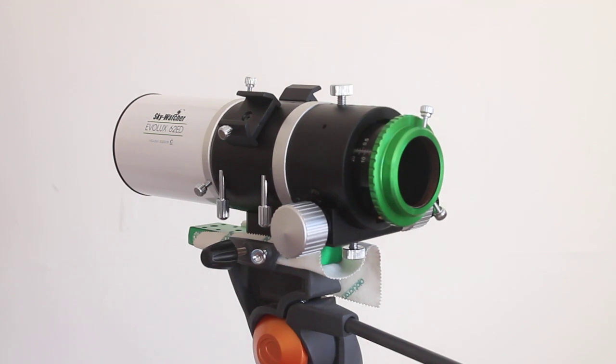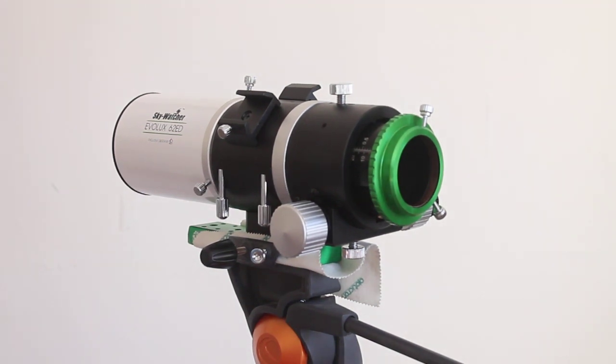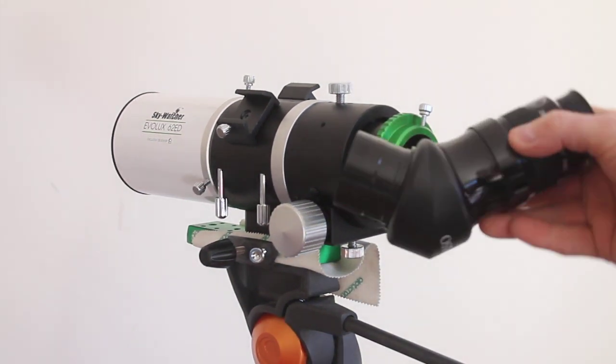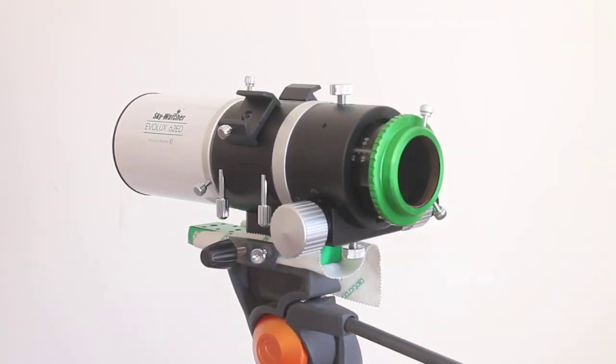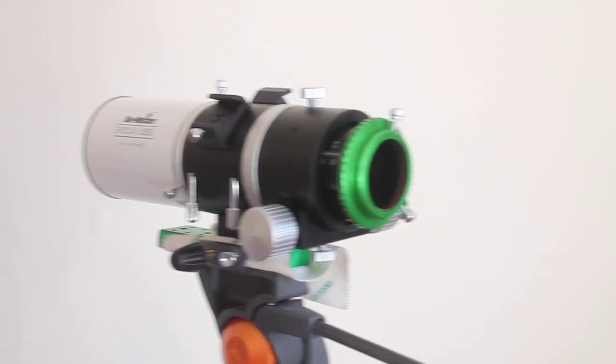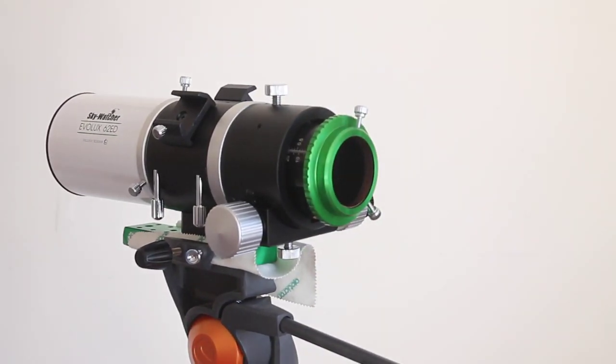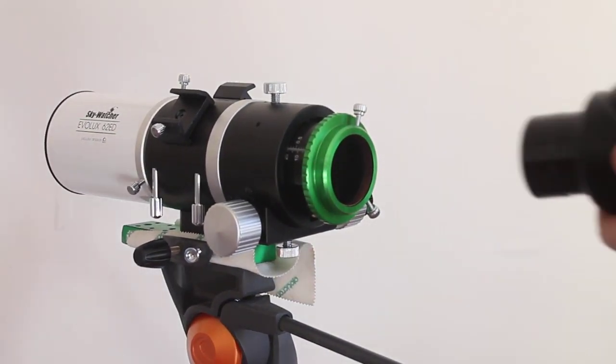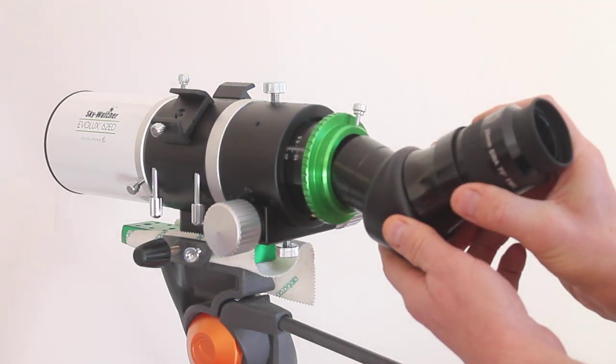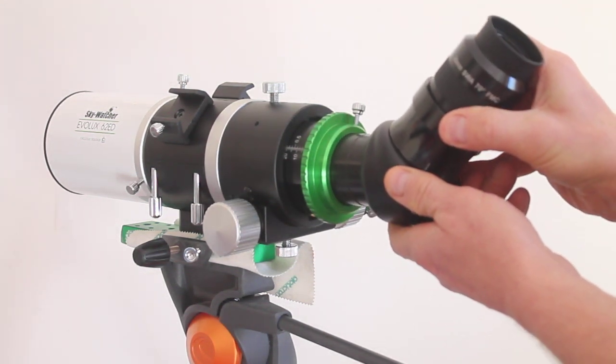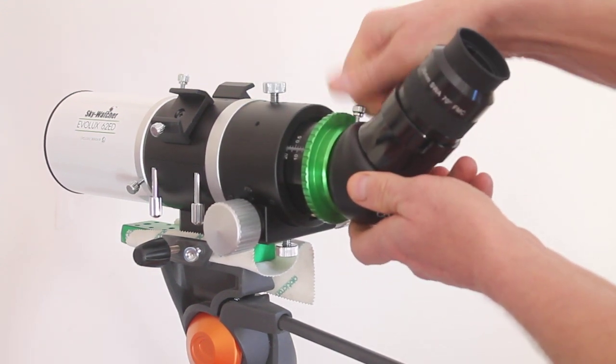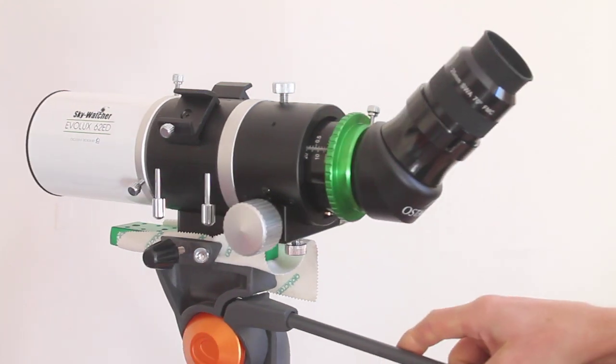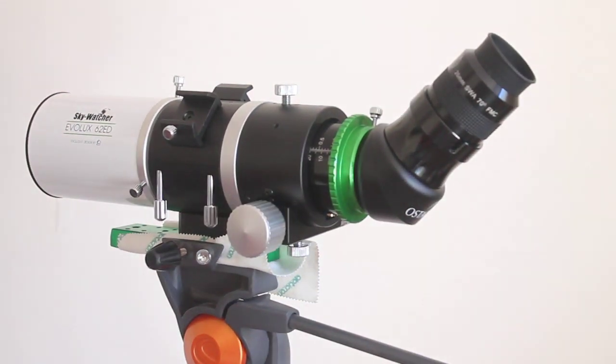So what I have here, I did one earlier, is a 45 degree prism diagonal and a 2 inch eyepiece. So what I will do, I will very carefully put them in. What I found was rather than put it straight in, put it in at an angle like that, straighten it up, and it slides in nicely.